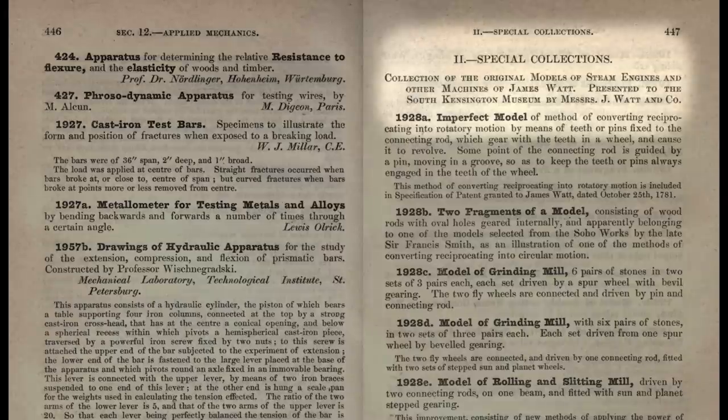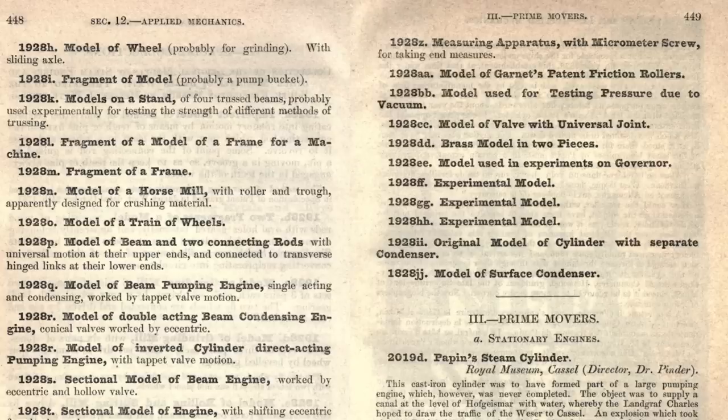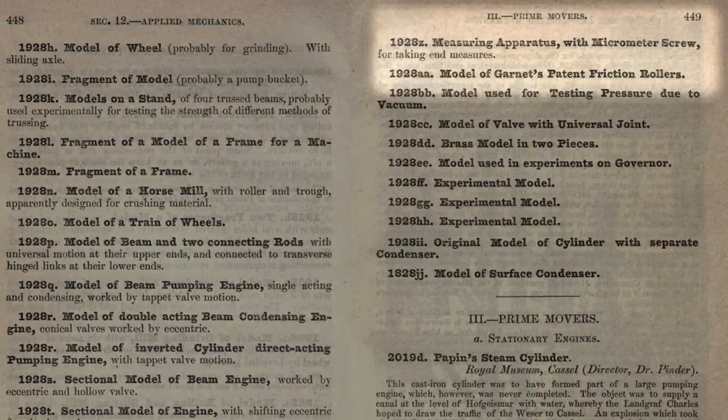In that Special Loan Collection, there were some special groups of objects, some of which came from the company descended from Bolton and Watt, and this micrometer is one of those objects and was presented as being made by James Watt.